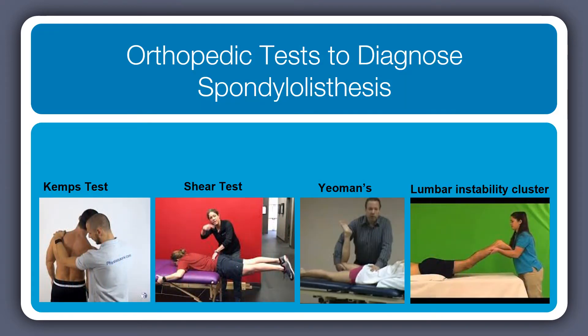We use orthopedic tests in order to diagnose spondylolisthesis, or at least to indicate that we need to get an x-ray or other imaging to figure out if that's the type of pain we're working with. The orthopedic tests used are the shear test, Yeomans, and the lumbar instability cluster. That's what we use in the clinic to figure out if this is what's going on.